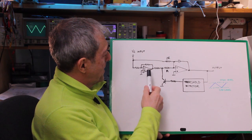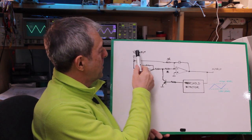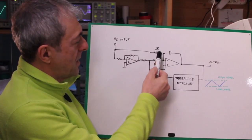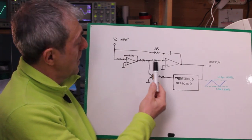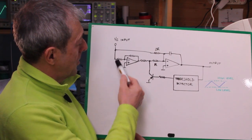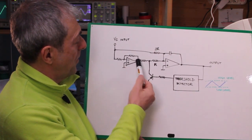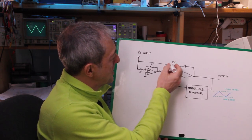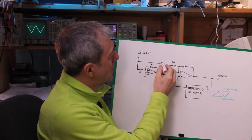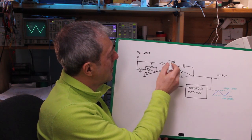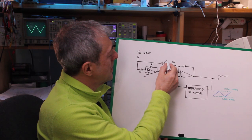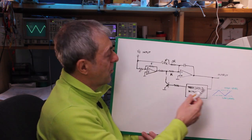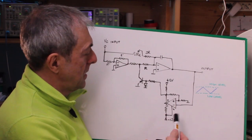Here is the voltage control input. The control voltage goes through a resistor that is twice the value of the other resistor, and there is an op-amp used to invert the voltage. By adding a variable resistor here, we can even adjust the symmetry of the output waveform.